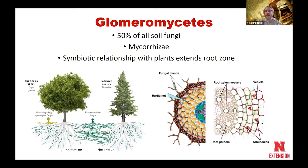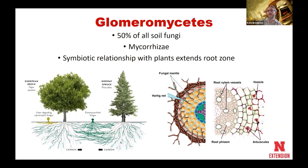The ectomycorrhizae may have some hyphae that go into the root, but they don't actually colonize the root tissue. Instead, they create a fungal mantle that encompasses the root to help extend the root zone. Mycorrhizae are very beneficial — research shows plants with a strong mycorrhizae association tend to tolerate drought conditions much better because that root zone is so expanded. They're also a lot better at nutrient acquisition. Fungi are very good at releasing phosphorus; plants aren't. The fungus takes some carbon from the plant and in turn the plant takes phosphorus from the fungus.